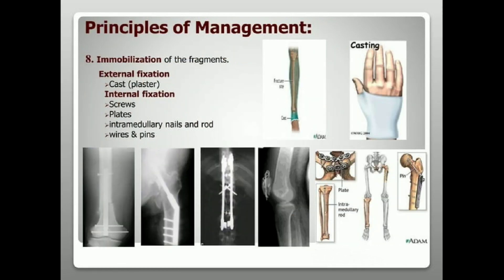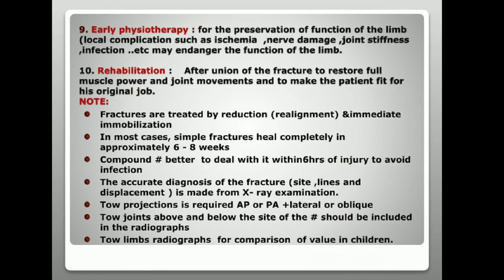Further management steps include: reduction of the fracture; immobilization of the fragments using external fixation such as cast or plaster, or internal fixation including screws, plates, intramedullary nails, rods, wires, and pins; early physiotherapy for preservation of limb function; and rehabilitation after union of the fracture to restore full muscle power and joint movement and to make the patient fit for their original job.